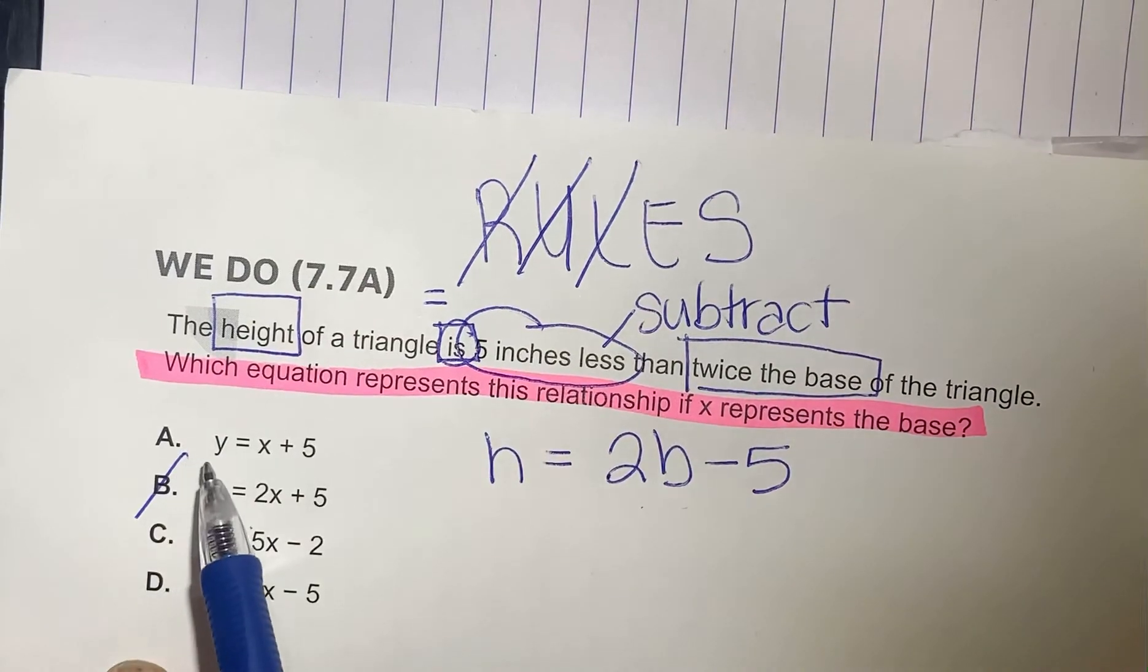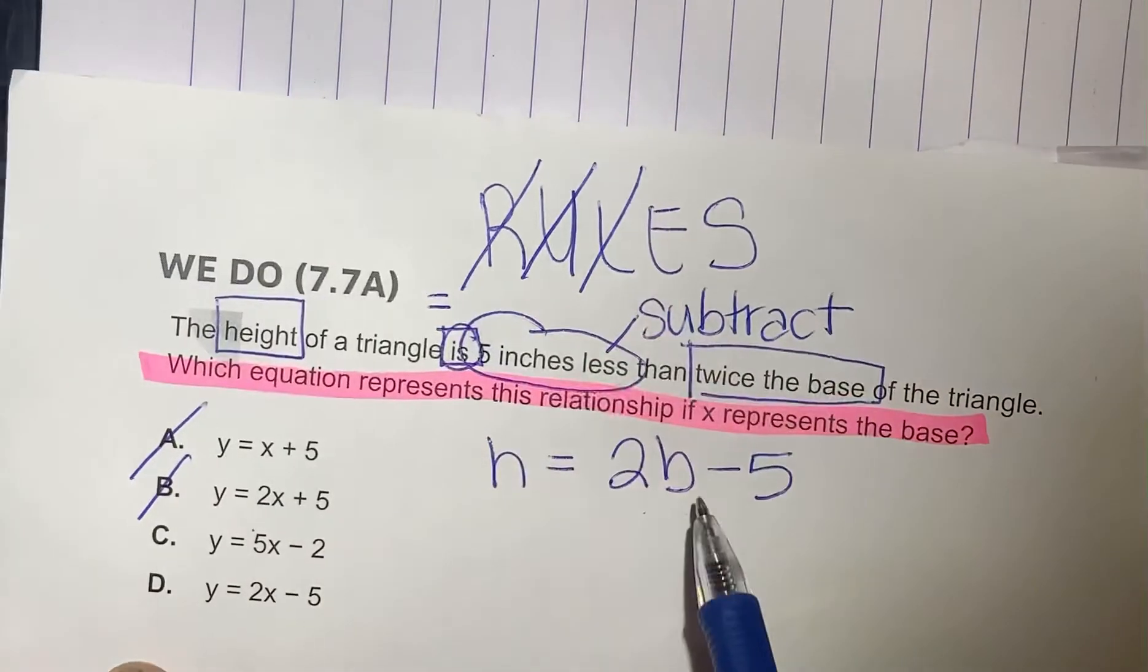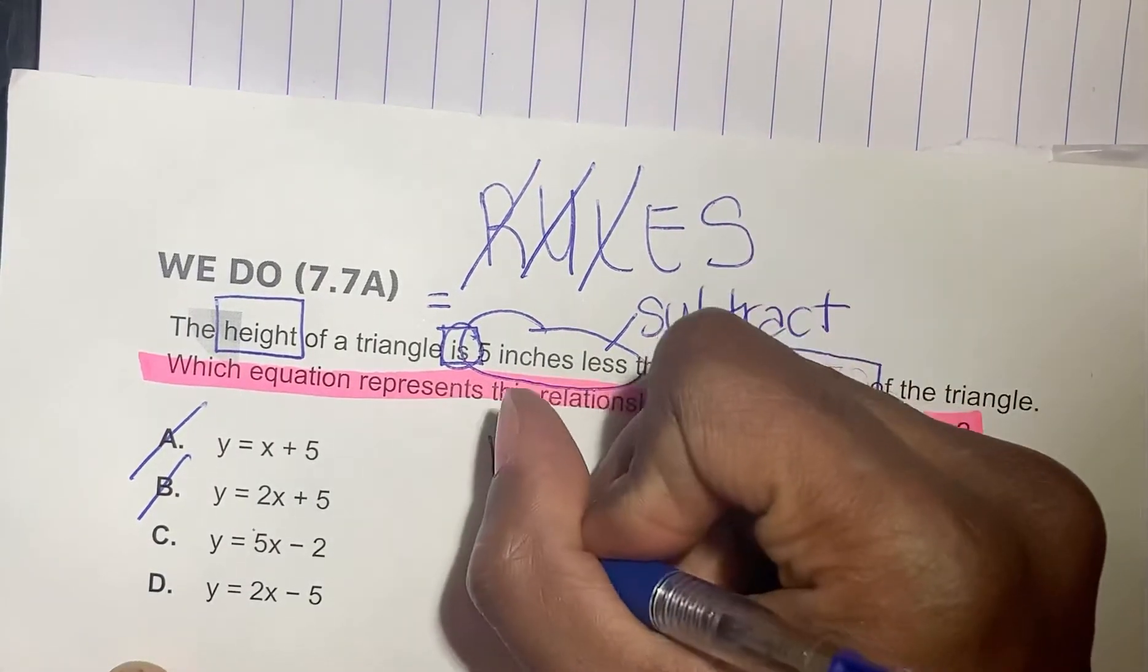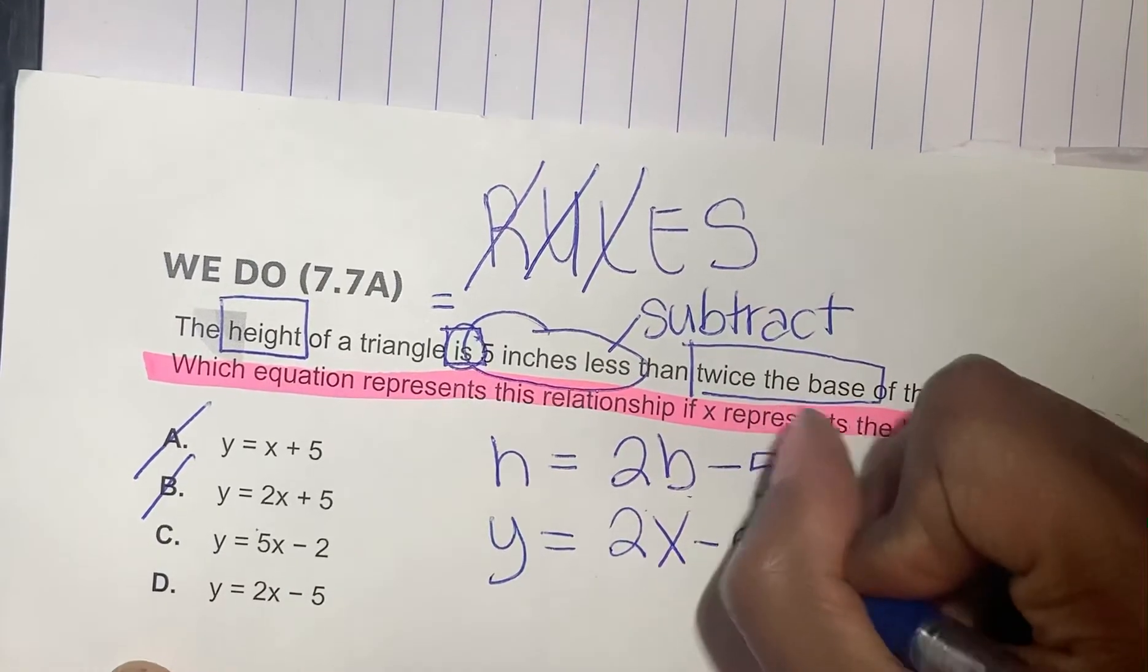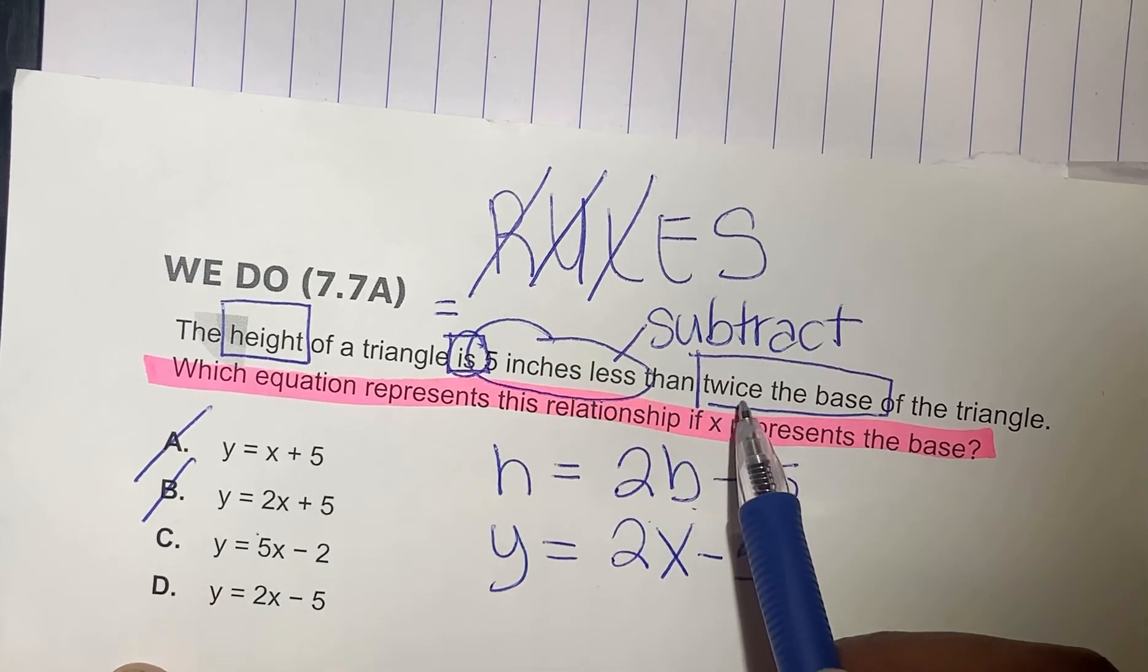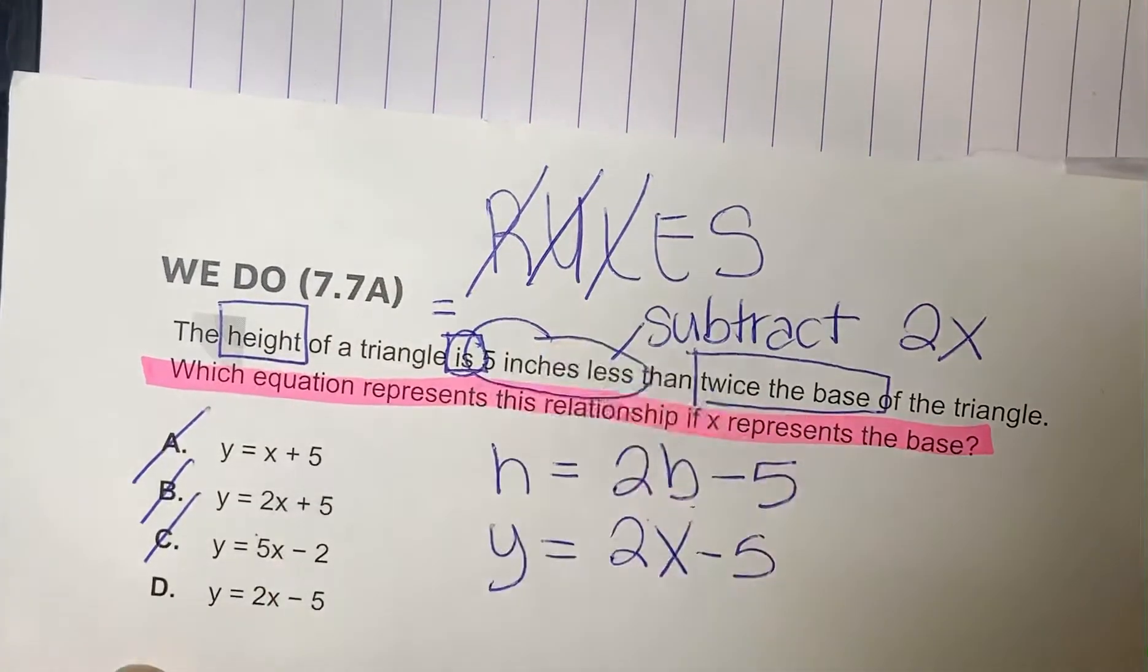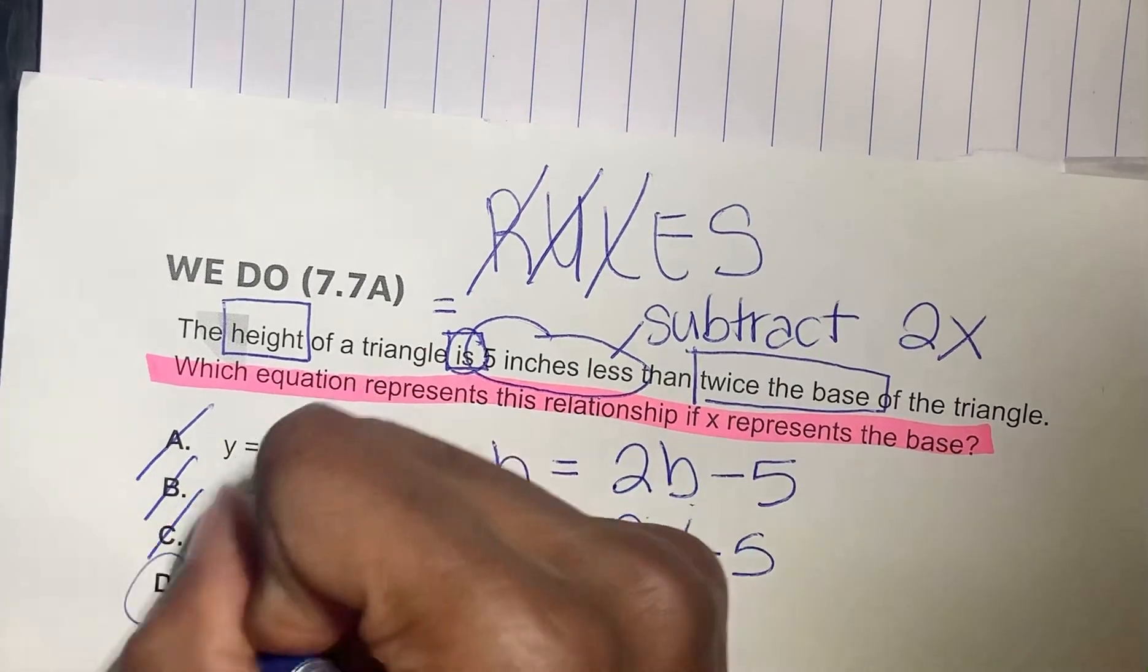Can't be A because it's going to be two times B or two times x. Notice that the variables here don't really change anything. You can just replace the height with y, h equal to 2x minus 5. So 5x minus 2. It doesn't say five times. It says twice, twice being two times. So it's not going to be C. The answer, ladies and gentlemen, is going to be D, 2x minus 5.